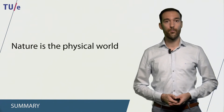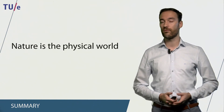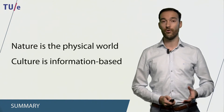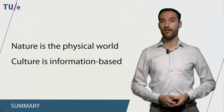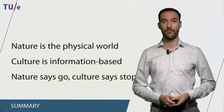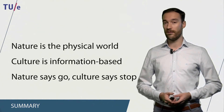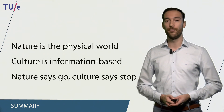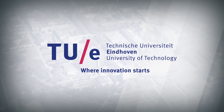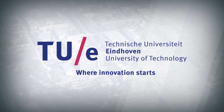To recap, we have seen that nature is the physical world around us with all of its laws and processes. Culture can be defined as an information-based system of shared ideas and values. And the most important statement in this chapter is: nature says go and culture says stop. That was all for today. Thank you for listening, and hope to see you again soon.